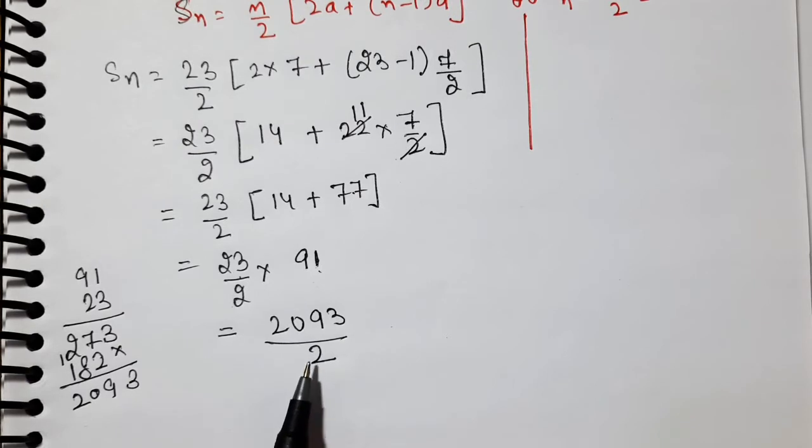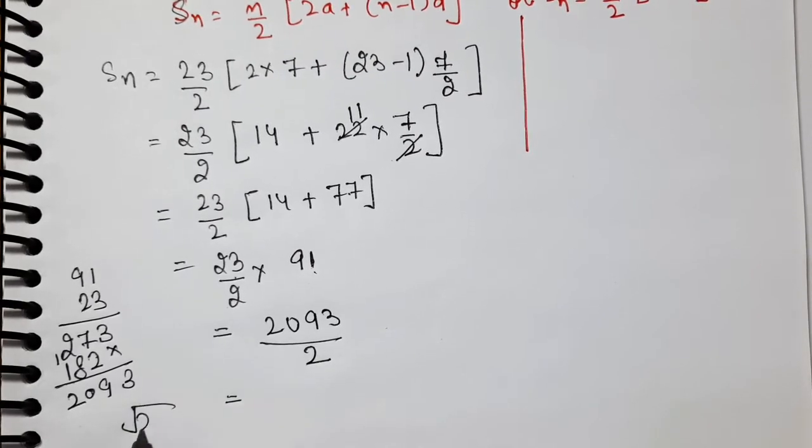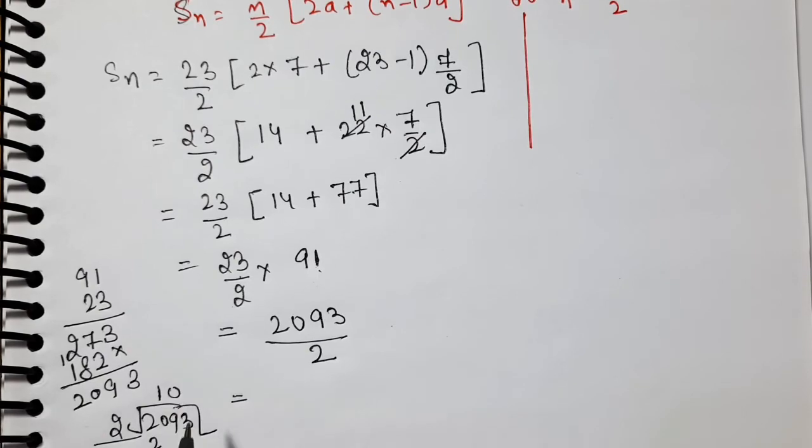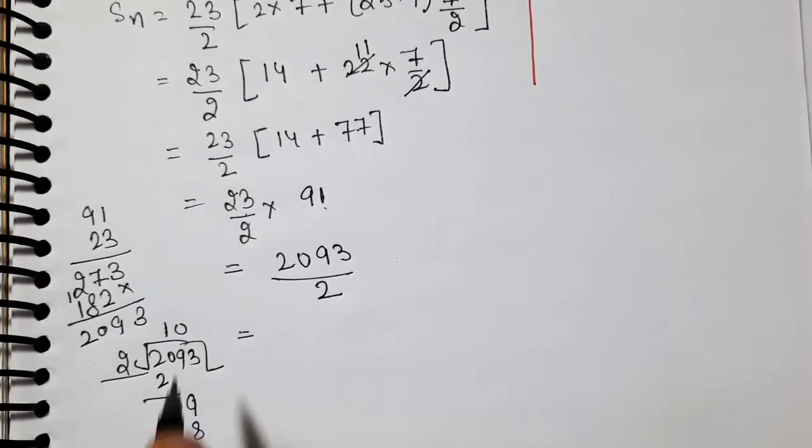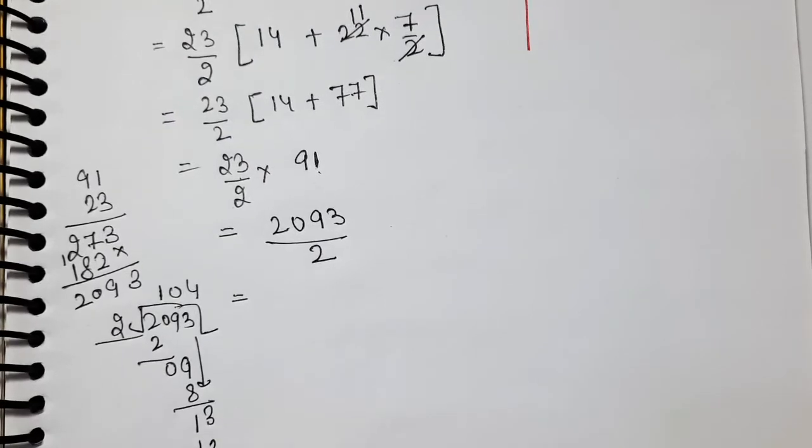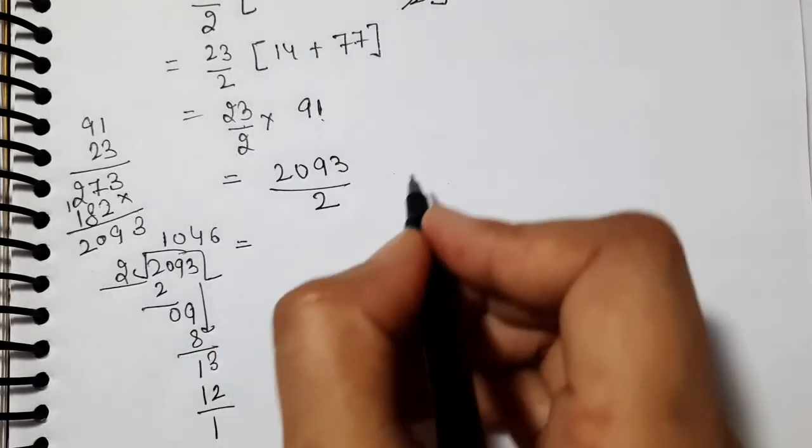Now apply the S_n formula. S_n has 2 formulas. S_n is equal to n by 2 times [2a plus (n minus 1) times d]. And the second one is S_n equals n by 2 times (a plus l), meaning first term plus last term. You can apply either one, answer will be exactly the same in both cases.